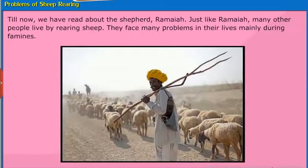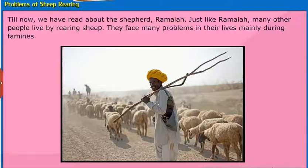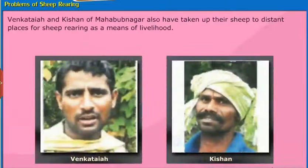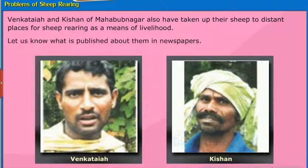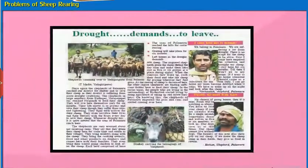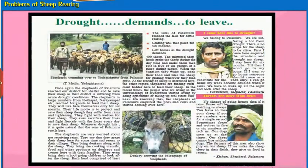We have read about the shepherd Ramaya. Just like Ramaya, many other people live by rearing sheep. They face many problems in their lives, mainly during famines. Venkataya and Kishan of Mahabubnagar have also taken their sheep to distant places for sheep rearing as a means of livelihood. A newspaper on screen gives information about the problems faced by shepherds Venkataya and Kishan.